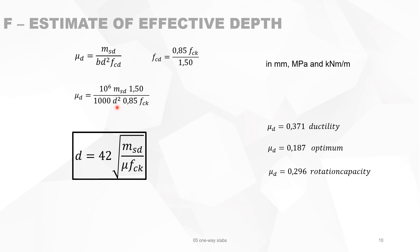You can reorganize the equation to solve for d, the effective depth. With Msd in kilonewton-meter per meter and fck in megapascals, and μ the reduced bending moment as chosen by the designer: for ductility use μ = 0.371, for optimum material use μ = 0.187, or for rotation capacity μ = 0.296. Any other value is also possible — it is the designer's choice.